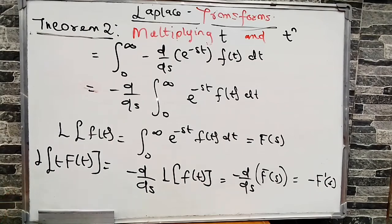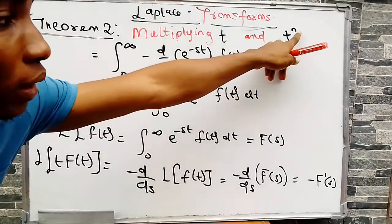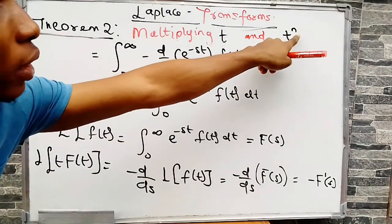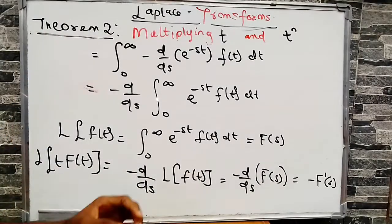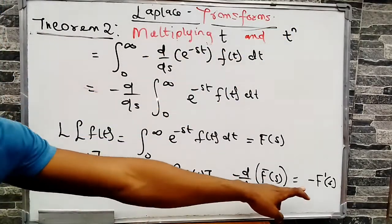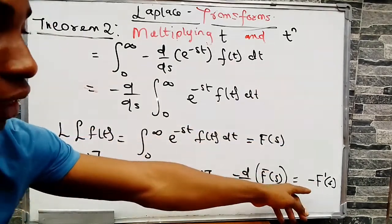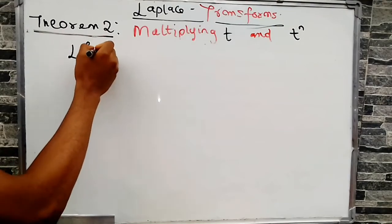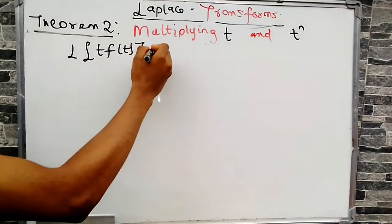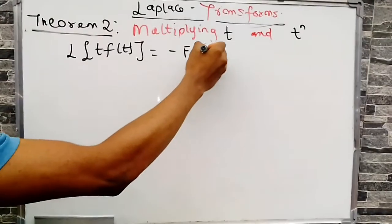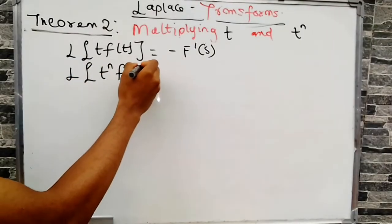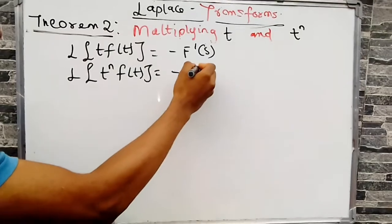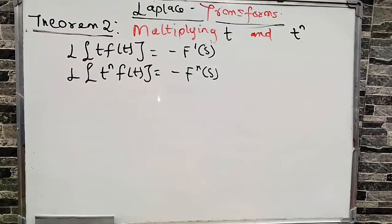The same applies for the Laplace of t^n. The power of t determines the order of derivative we take in the answer. If it's t squared multiplying the function, our answer will involve the second-order derivative of F(s). Since L{t·f(t)} = -F'(s) is first order, L{t^n·f(t)} = (-1)^n times the nth order derivative of F(s). Now let's take an example.